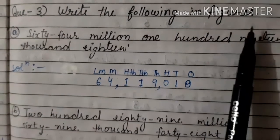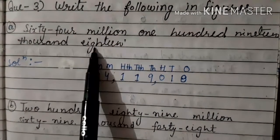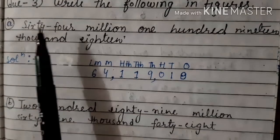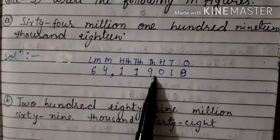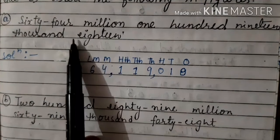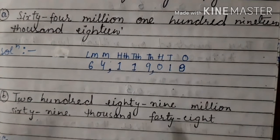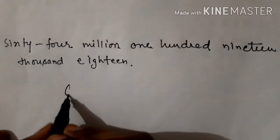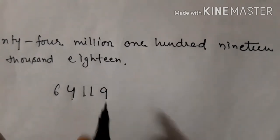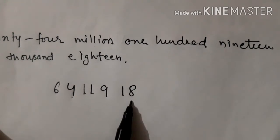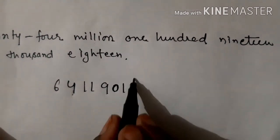Next question: Write the following in figures. The number given is sixty-four million, one hundred nineteen thousand, eighteen. We write: 64 (for 64 million), then one hundred nineteen (119) for the thousands, then 18. Since there is no hundreds place in 18, we put a zero in the hundreds place. Let's count: Ones, Tens — then Hundreds, so we put zero there.